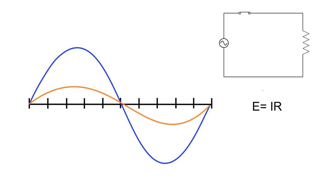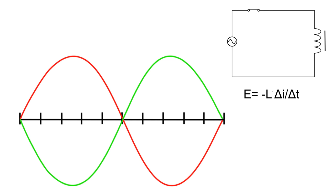When we get into an inductive circuit, this doesn't hold true because we have no resistance in that circuit. When we're dealing with a purely inductive circuit, things are going to get a little funky. Before I even discuss current, let's discuss this formula: E = -L(ΔI/ΔT).